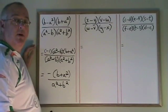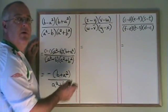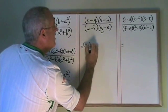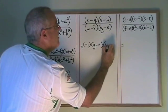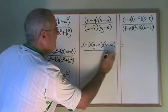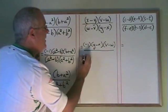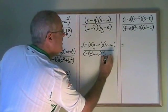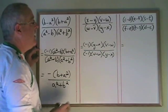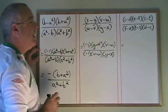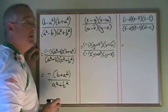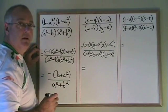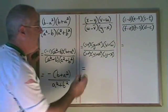Here we have two opportunities to use the minus 1 trick, and there's some flexibility about whether we do it on the top or the bottom. What I'll do is factor a negative 1 out of x minus y to get y minus x, and leave v minus w as v minus w on the top. If I factor a minus 1 from w minus v, I get v minus w on the bottom, and leave y minus x on the bottom as is. Now there's a lot of cancelling to do: the y minus x's cancel top and bottom, the v minus w's cancel top and bottom, and the two minus 1's cancel as well. The final answer is 1 — anything over itself equals 1.